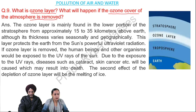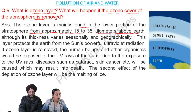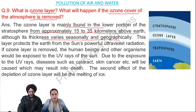The ozone layer is mainly found in the lower portion of the stratosphere, from approximately 15 to 35 kilometers above earth, although its thickness varies seasonally and geographically.